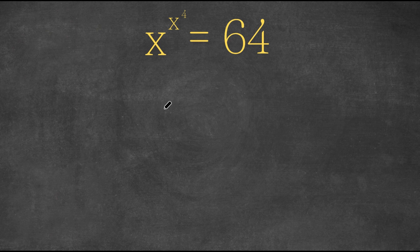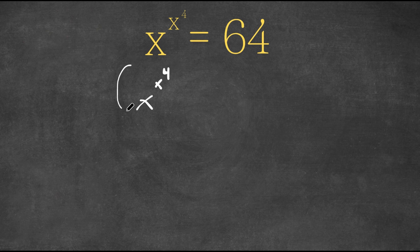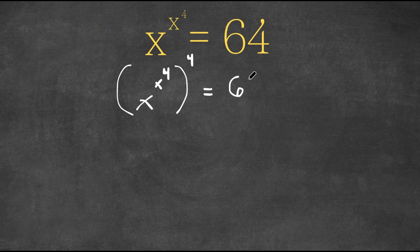What I'm first going to do is take the power of 4 on both sides. So now we have x to the power of x to the power of 4, all to the power of 4, is equal to 64 to the power of 4.